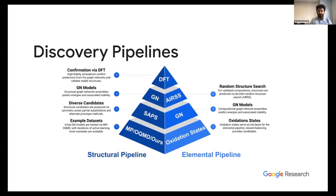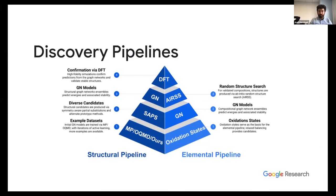This is not just one pass of the triangle. One of the big highlights is that we can do this over and over again. As the data flywheel concept suggests, every time we do DFT calculations, we go back and add this data to our training data for our GNN models, repeating this loop and improving over time. This is true on both the elemental and structural pipelines.